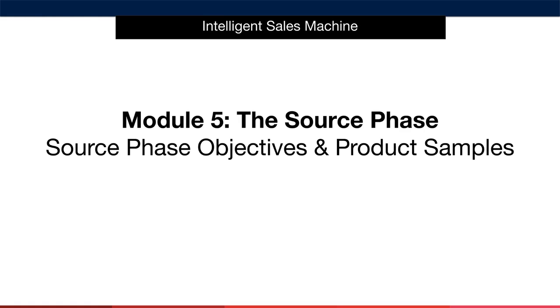We are in Module 5 of the Intelligent Sales Machine Program. At this point in time, you're ready to get your eyes and hands on a sample of your product before you take the final step of placing your first order.